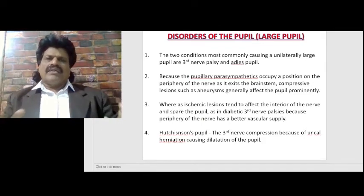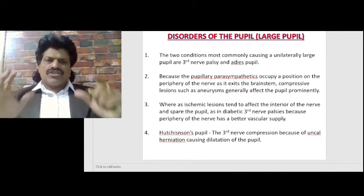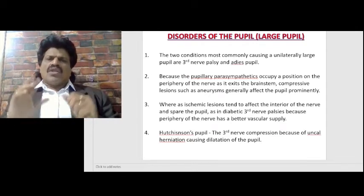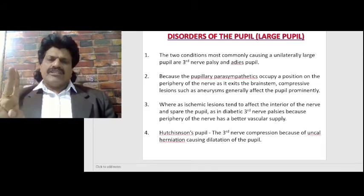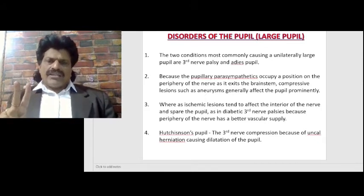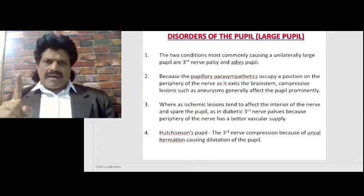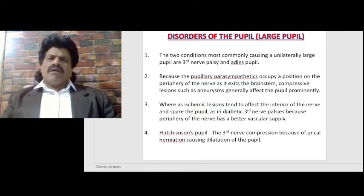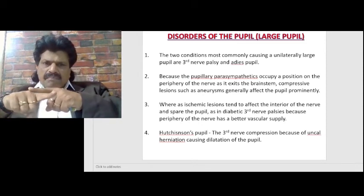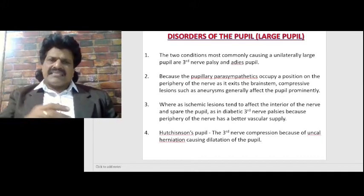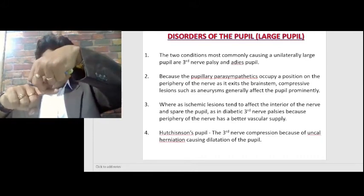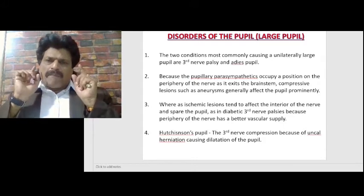Now let's talk about the large pupil. The two conditions most commonly causing a unilaterally large pupil are third nerve palsy and Adie's pupil. Because the pupillary parasympathetic fibers occupy a position on the periphery of the nerve as it exits the brainstem, compressive lesions such as an aneurysm generally affect the pupil prominently.